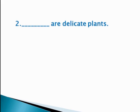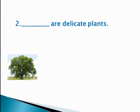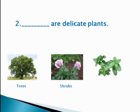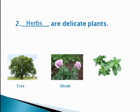Now dear students, blank number 2: dash are delicate plants. Delicate means they can be easily broken or damaged. In the first option we have trees, then shrubs, and the last option is herbs. So look carefully at these pictures and tell me what is the answer? Yes — herbs are delicate plants.